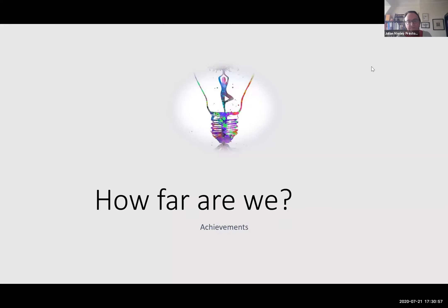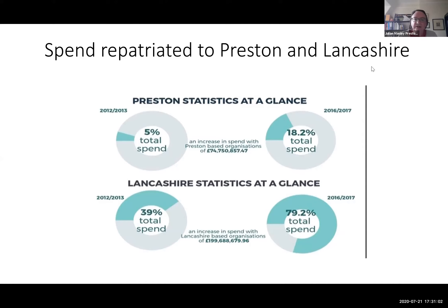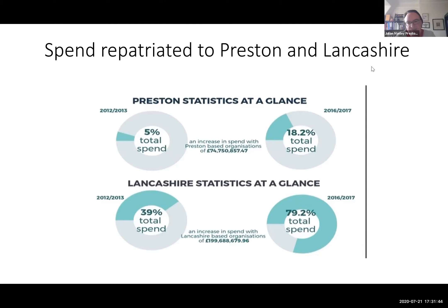How far have we got? This graphic demonstrates how successful we've been up to 2017, and we have no reason to believe these figures are any less impressive today. In 2012 to 13, only 5% of the anchor institution spends — remember those are institutions like the university, the police, the hospital, the big housing association, Lancashire County Council — only 5% of their spend was spent in Preston. By 2017 that had risen to 18.2%, an increase of nearly 75 million pounds. In the Lancashire region as a whole, the figures are even more impressive — 39% of the anchor institutions' total spend in the Lancashire region in 2012/13, rising to nearly 80% by 2017, a total of 200 million pounds repatriated into the Preston and Lancashire region.